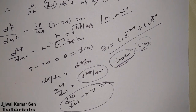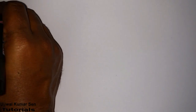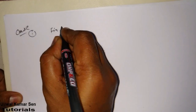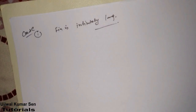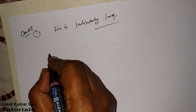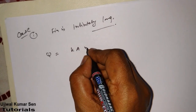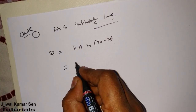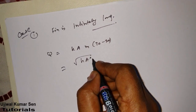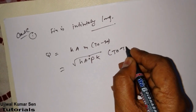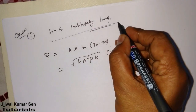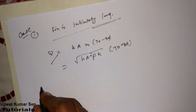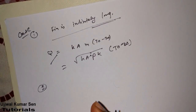We have different cases for fins. Case 1: the fin is infinitely long. For an infinitely long fin, the heat transfer rate is: q = k·A·m·(T₀ − T∞), which can also be written as √(hP·kA)·(T₀ − T∞).